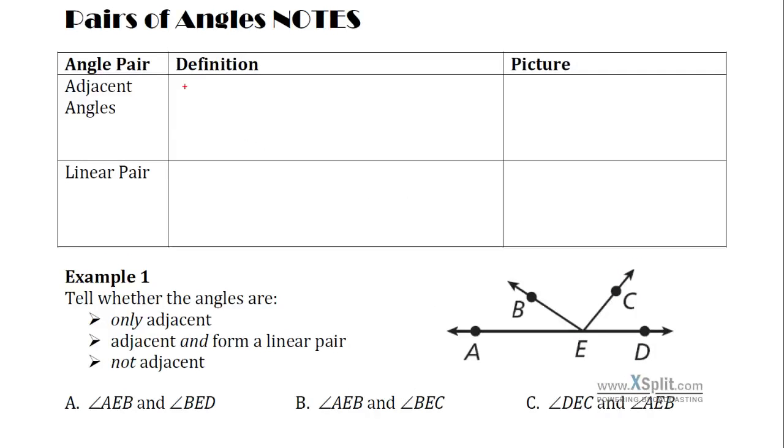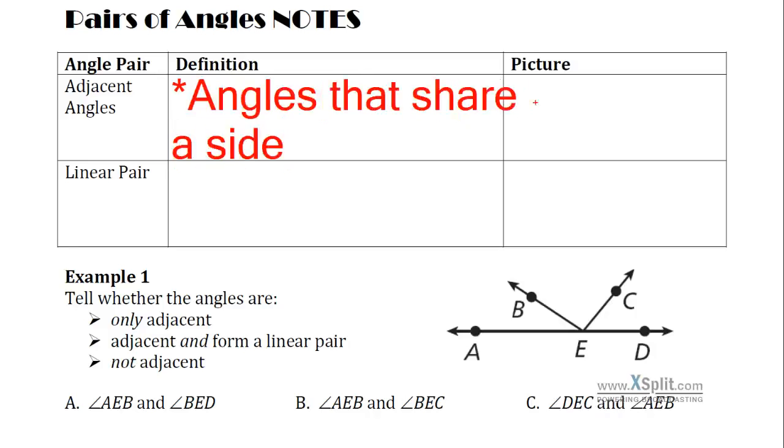First one that we're going to look at is the adjacent angles. Adjacent angles have a couple of properties. If you've heard the word adjacent, it just means next to. So they're going to be angles that share a side.